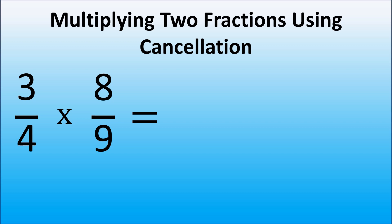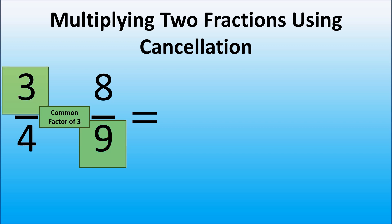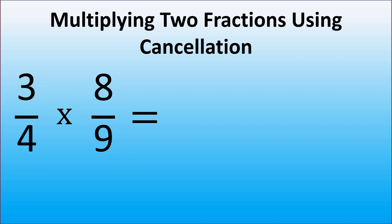Let's see if there are any common factors between the numbers here. 3 and 9 have a common factor of 3, and 8 and 4 have a common factor of 4.